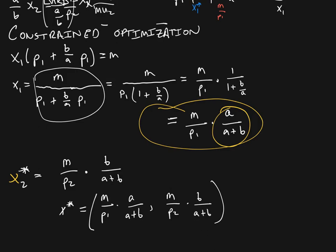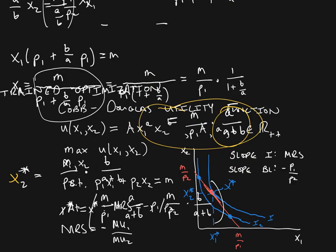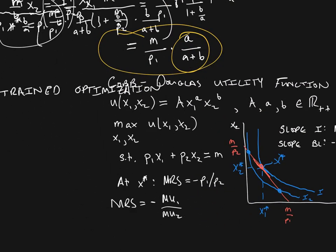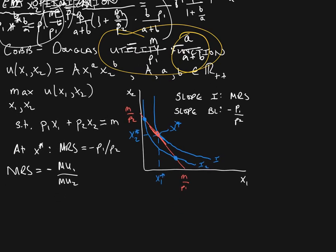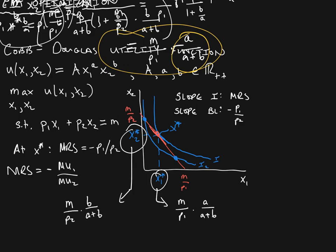So there you have it — the optimal consumption bundle. Going back to our graph: x1* = (M/P1)·[a/(a+B)] and x2* = (M/P2)·[B/(a+B)]. In a real problem you'd have actual numbers here, but we've left it generic. That's the solved consumer choice problem for the Cobb-Douglas style utility function. Thanks for watching.